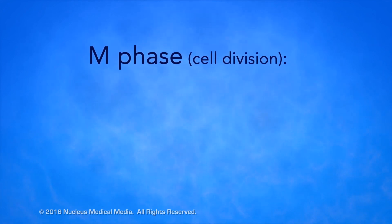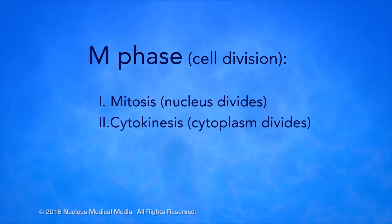During the M phase, cell division occurs through two processes: mitosis, when the nucleus divides, and cytokinesis, when the cytoplasm divides.